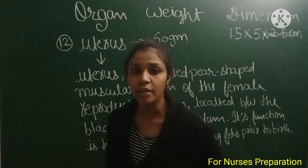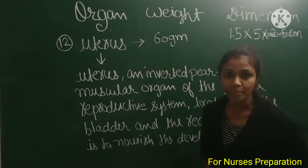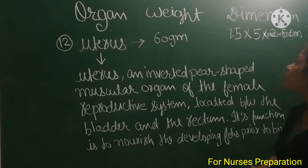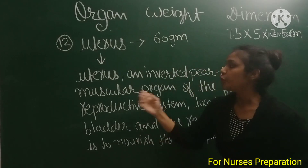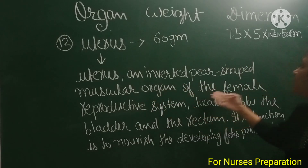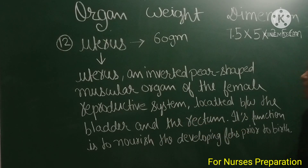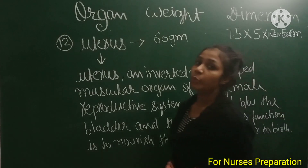Next organ is the uterus. The uterus weighs 60 grams and its dimensions are 7.5 x 5 x 2.5 cm. The uterus is an inverted pear-shaped muscular organ of the female reproductive system, located between the bladder and the rectum. Its function is to nourish the developing fetus prior to birth.